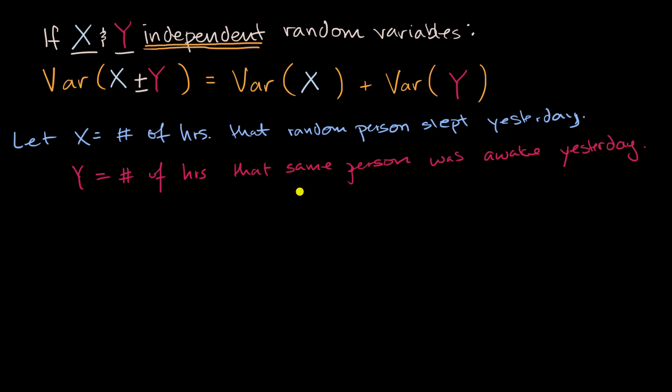We know that X plus Y, even though they're random variables and there could be variation in X and there could be variation in Y, for any given person X plus Y is always going to be equal to 24 hours. So these are not independent.